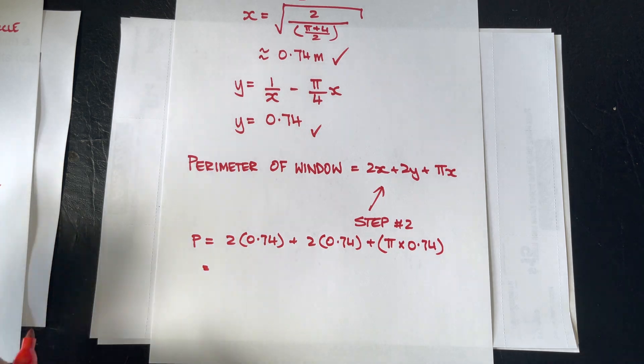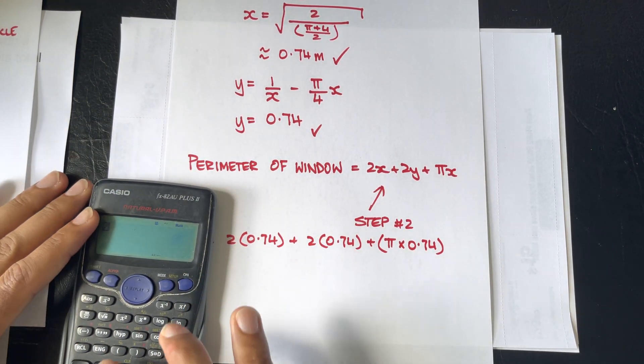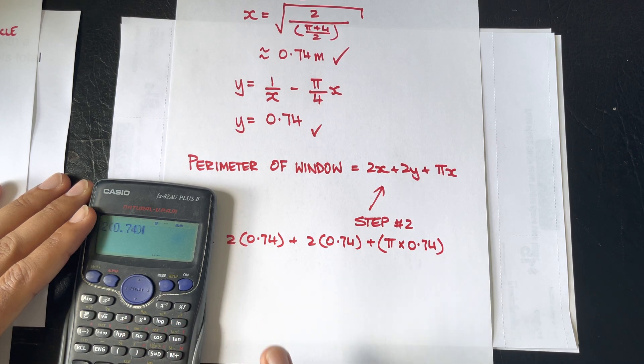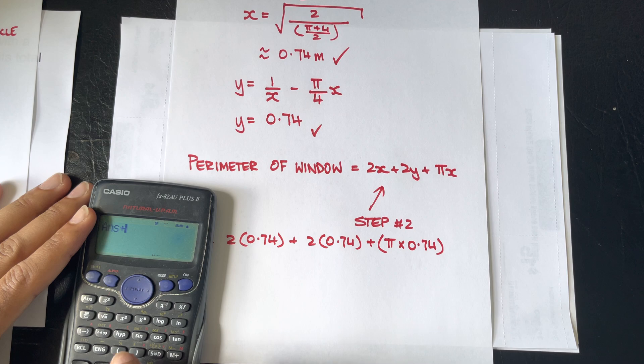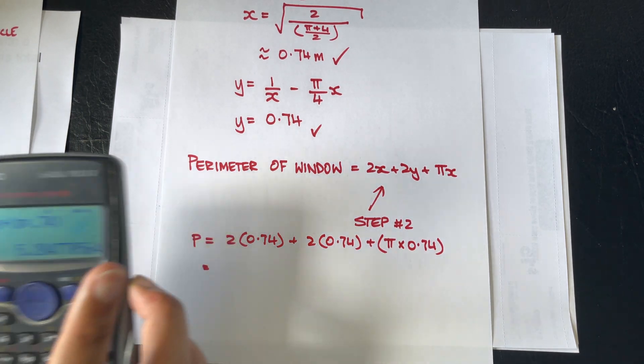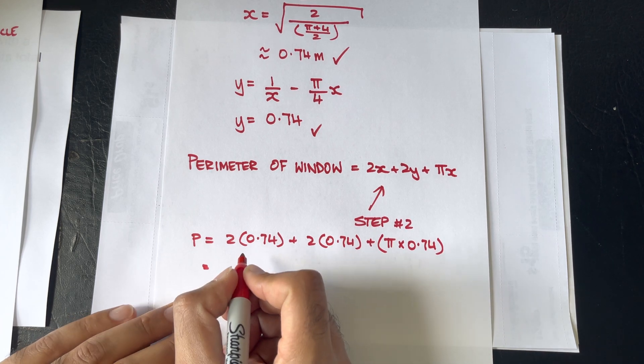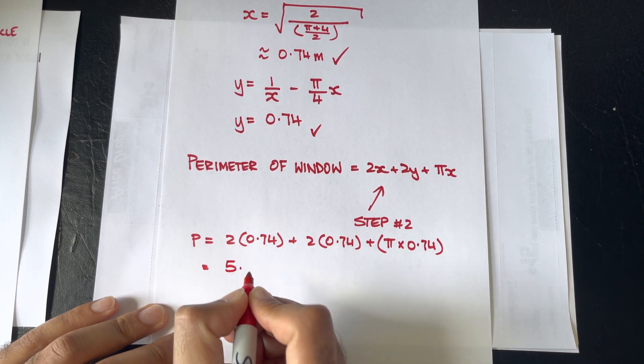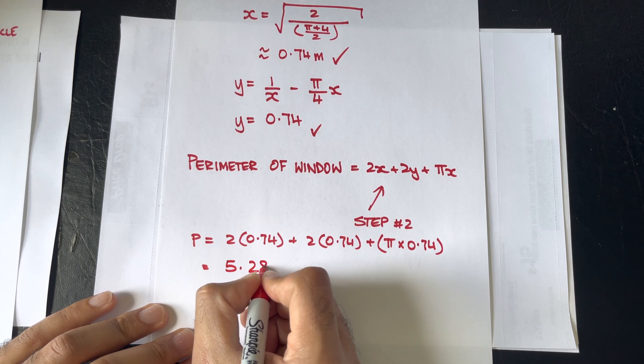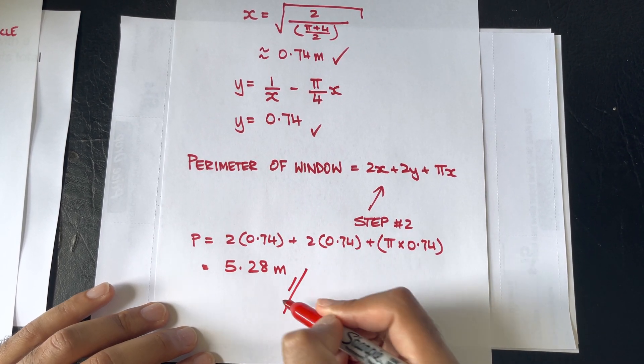And that would be our answer, which I shall quickly do on our calculator. And the perimeter will be 5.28 meters and that's our answer there.